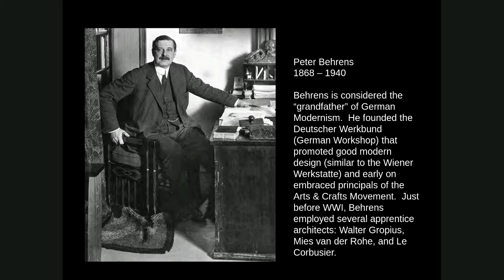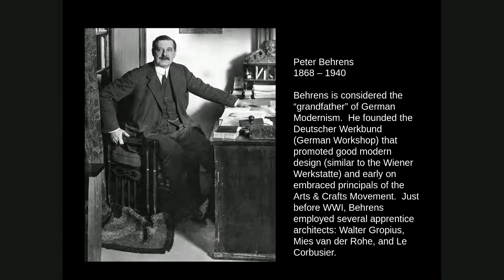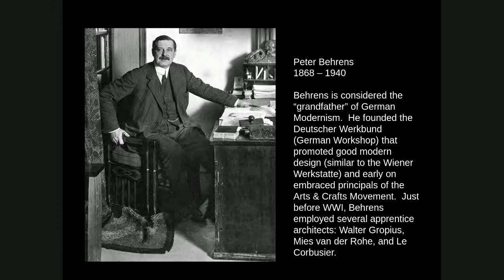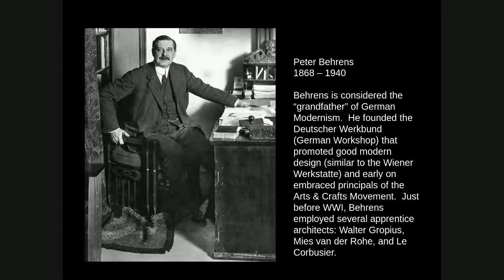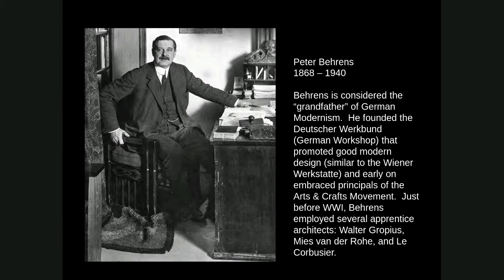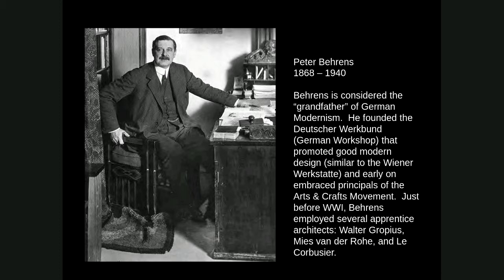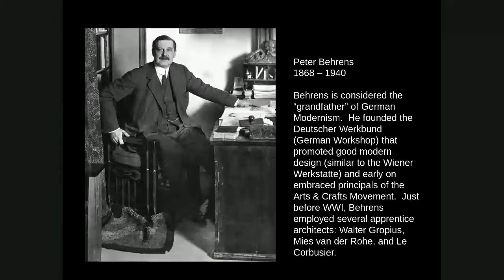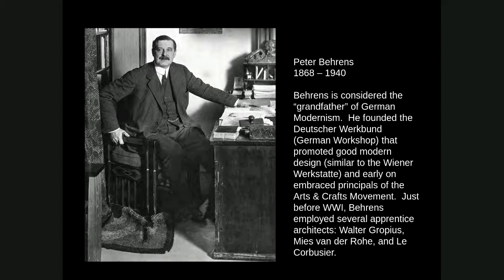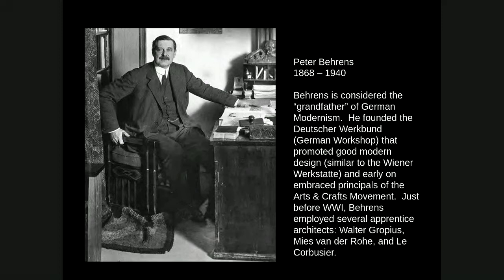One reason he's called the father or grandfather of modernism is that at one point in his career, Behrens had Walter Gropius, Mies van der Rohe, and Le Corbusier all working in his office — possibly all three at the very same time, certainly two of them working together. Mies van der Rohe recalled that Behrens had a copy of the Wasmuth portfolio in the office and staff would filter through it, absorbing Wright's ideas. They didn't want to copy Wright, but they were deeply influenced by his ideas of space, massing, and geometry — ultimately creating the modernist movement in part from those ideas.